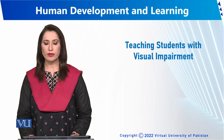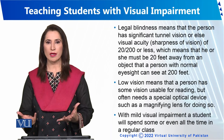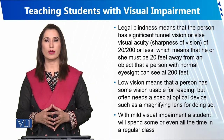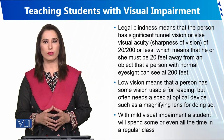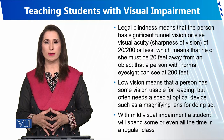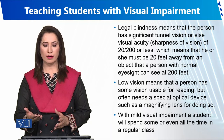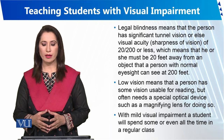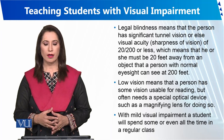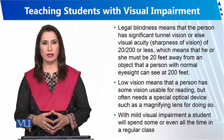How can we teach children with visual impairment? We can divide them into three types of visual impairments: mild visual impairment, low vision impairment, and legal blindness.